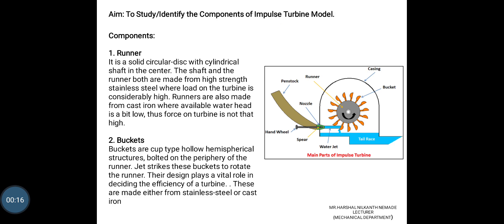Practical No. 1: Aim — to study and identify the components of impulse turbine model. Components are Runner and Buckets. Now, what is a Runner? It is a solid disc, circular, with a cylindrical shaft in the center. The shaft and the runner both are made of high strength stainless steel where the load on the turbine is considerably high. Runners are also made from cast iron where the available water head is a bit low.